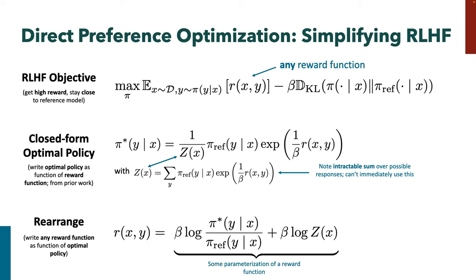This is intractable because Z is a sum over all possible sequences — we can't compute it. But we don't need to. We're just going to do algebra: take that closed-form expression and rearrange it to get the reward function as a function of the optimal policy. The key insight is we can now parametrize a reward function as a log probability ratio between some policy and the reference model. You can do this for any policy, not just the optimal one.